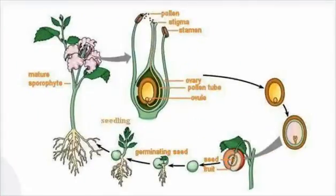Here we have a diagram of the fertilization and formation of the seed. After that, the fruit surrounds it until it's transported where it can then germinate.